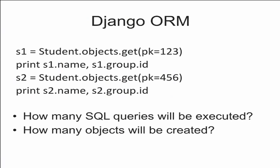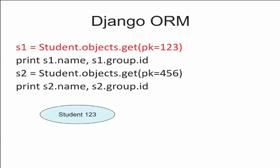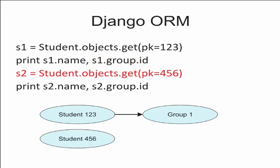Let's look at an example. Say we use Django and want to select a couple of students from the database, and print out their names and group IDs. After the first query is executed, a student object is created in memory. When we access the group attribute, a second query is sent to the database and a second object is created. Now when we create another student — let's say both students belong to the same group — Django will create another group object, a copy of the existing one. This happens because Django doesn't implement the identity map pattern: each object exists independently.